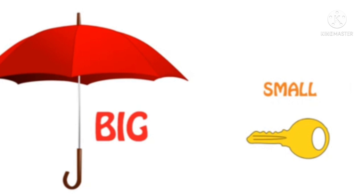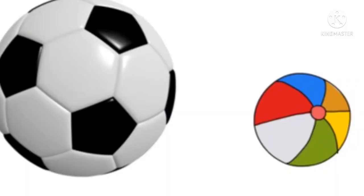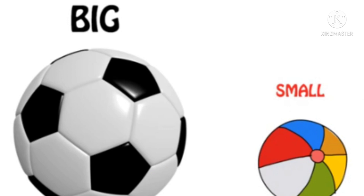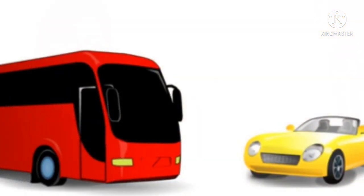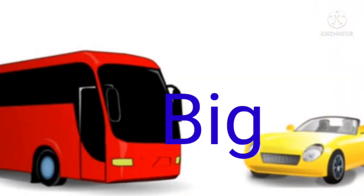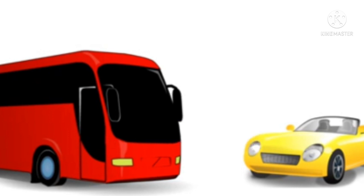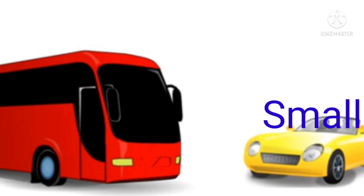Umbrella is bigger than key and key is smaller than umbrella. Football and colour ball — football is big and colour ball is small. Bus and car — bus is big and car is small.